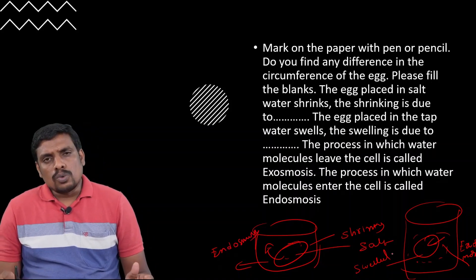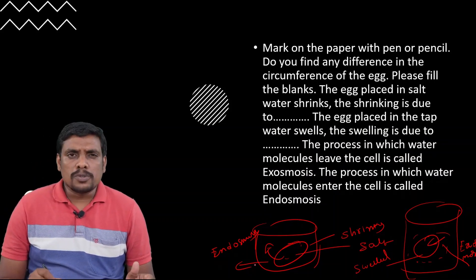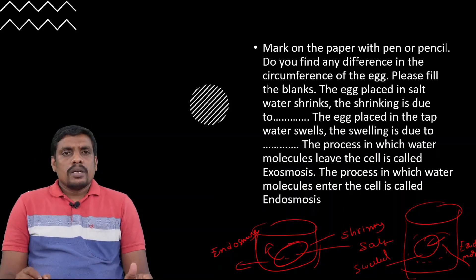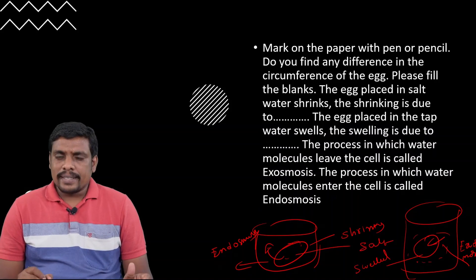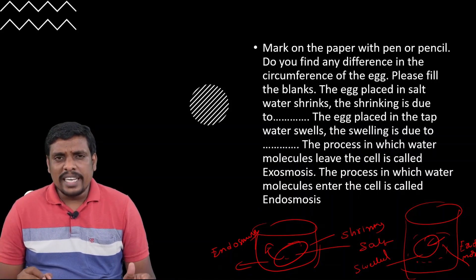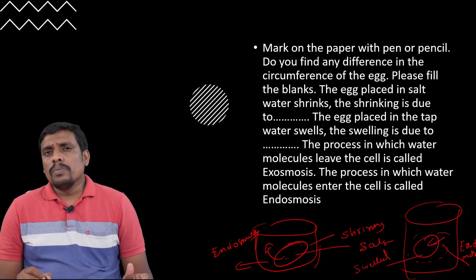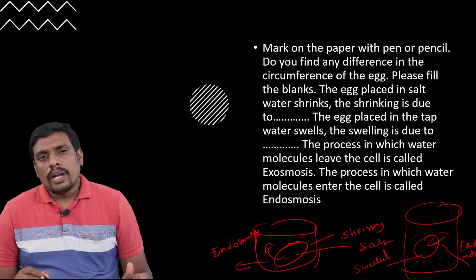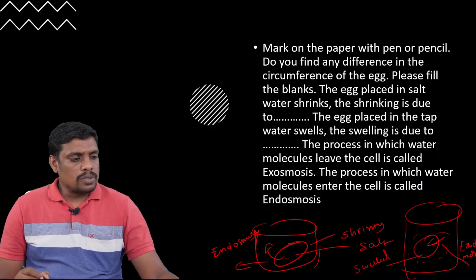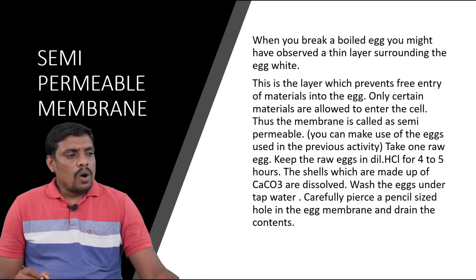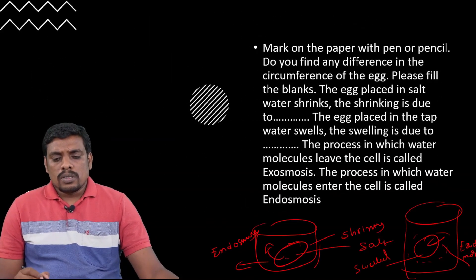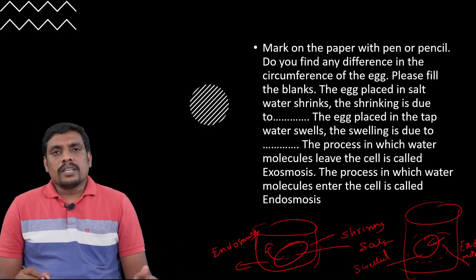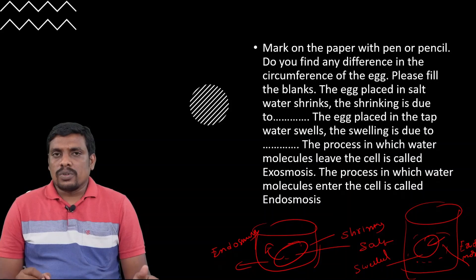'Exo' means towards the outside; 'endo' means out of the cell — or simply, 'endo' means exit. In this way, the water moves in or moves out, indicating the concept of osmosis which includes endosmosis and exosmosis. This is the concept of exosmosis and endosmosis. We will meet in the next section once again with the topic — stay tuned. Thank you, have a nice day.